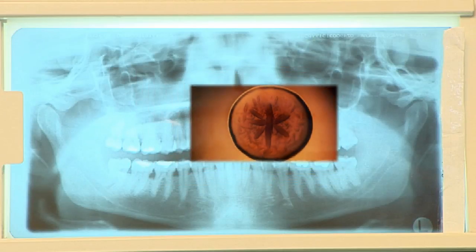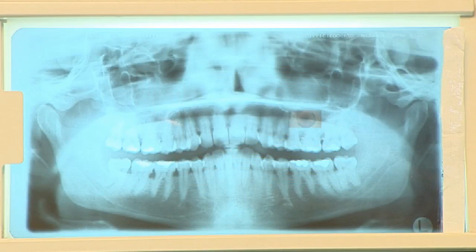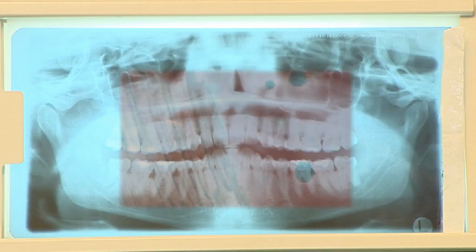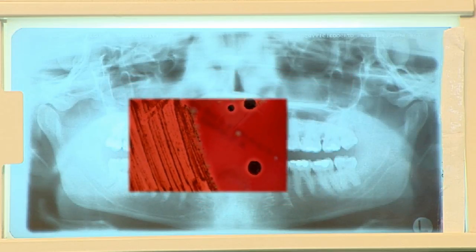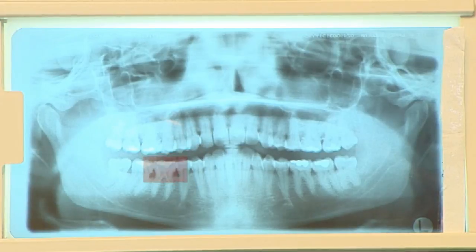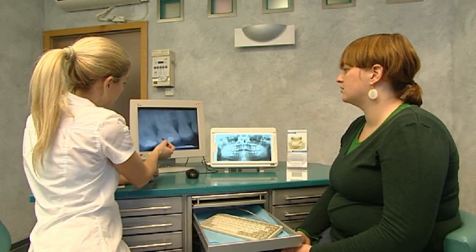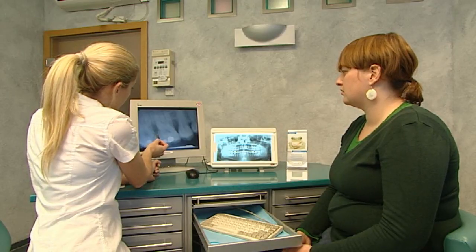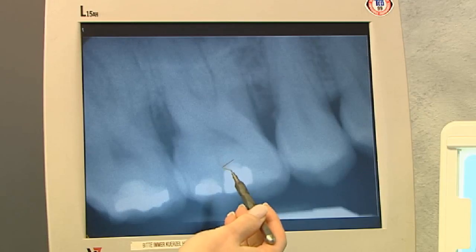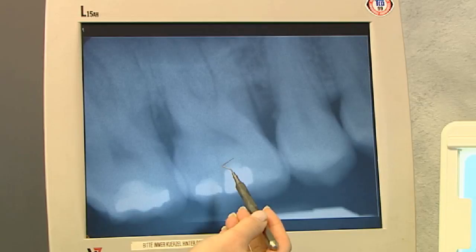Periodontitis and periimplantitis are infectious diseases which are attributed to special groups of bacteria. These marker bacteria actively destroy the periodontal soft and bony tissue, and cause massive inflammatory reactions, which ultimately lead to the loss of natural teeth and implants. For successful long-term treatment, targeted measures to combat these bacteria are of crucial importance.